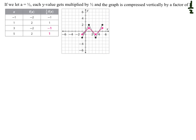Now we could take the same example and instead let a be 1 half. If we're multiplying by something less than 1, we're going to be compressing it. If I took all my y values and halved them — half of 2 is 1, and half of negative 2 is negative 1 — the whole graph is now half as tall. So we say compressed vertically by a factor of 1 half.